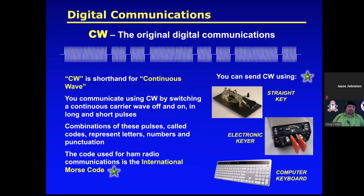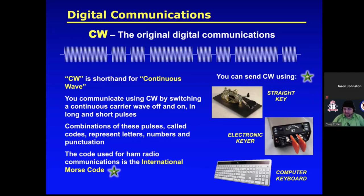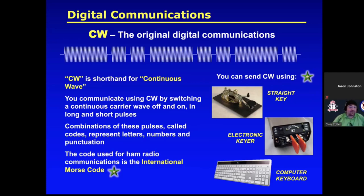CW — continuous wave — is the original digital. You communicate using CW by switching a continuous carrier wave off and on in long and short pulses. Combinations of these pulses called codes represent letters, numbers, and punctuation. The code used for ham radio is international Morse code. You can send CW using your keyboard with software, an electronic keyer for high speed, or the traditional straight key.